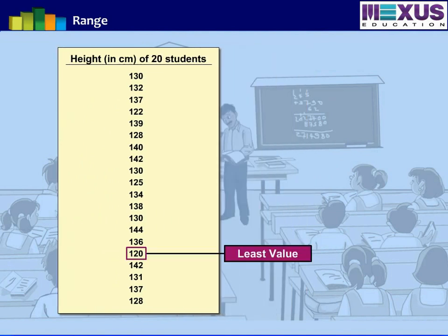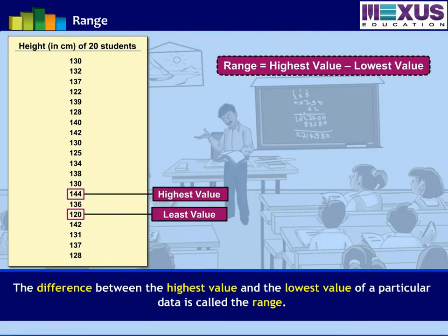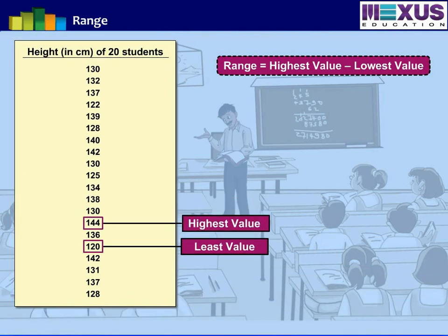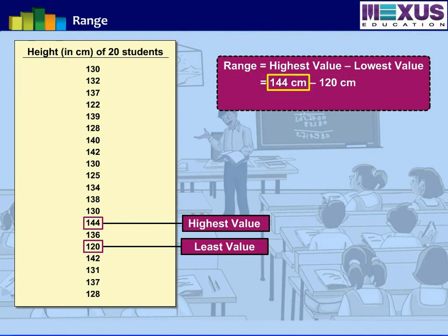Here we can see the least value is 120 centimeter and the highest value is 144 centimeters. The teacher wants to know in which range the measure of height belongs. To find the range, the formula is: the range is the difference between the highest and the lowest values. Hence, the range of the heights of 20 students would be 144 centimeter minus 120 centimeter, so we get range as 24 centimeter.